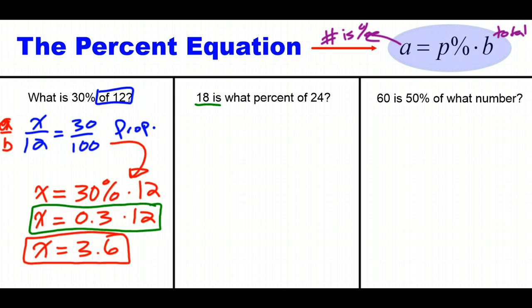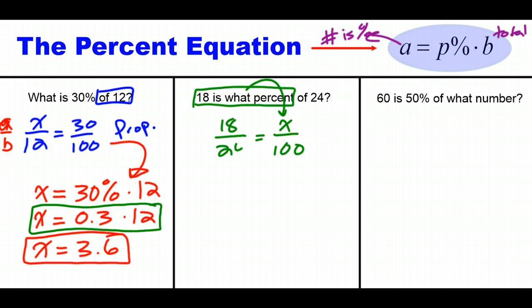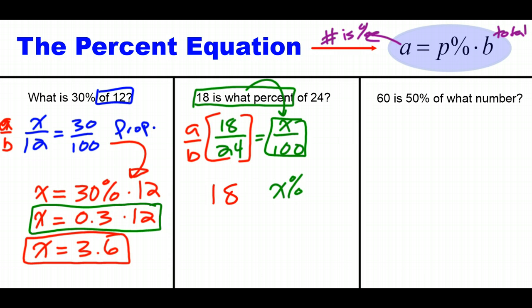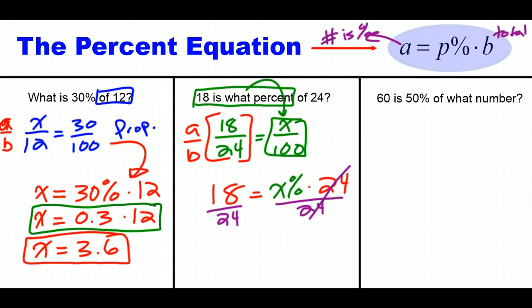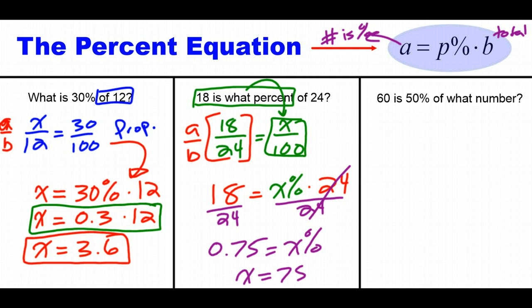Next: 18 is what percent of 24? 18 is the number that represents that percent, so it goes in the numerator. 24 is the total. Writing it as the percent equation: 18 equals X percent times 24. To solve, divide both sides by 24: X equals 18 over 24, which is 0.75 as a decimal. So X is 75%, and 18 is 75% of 24.